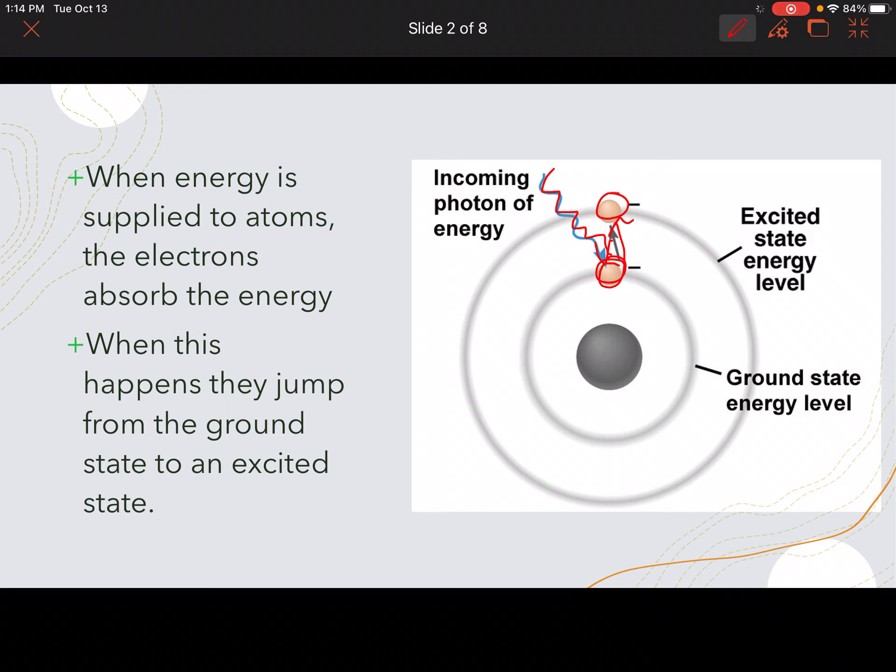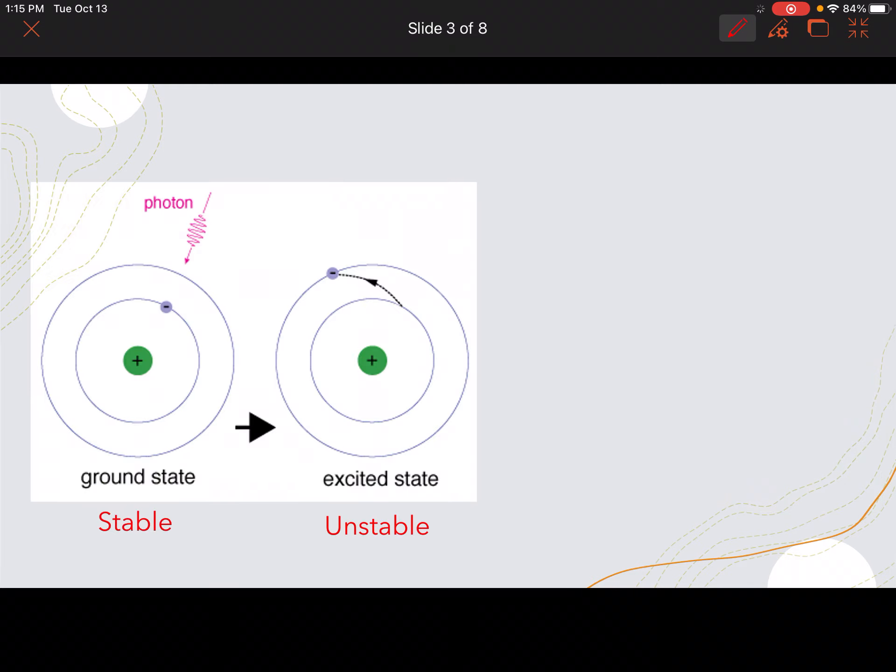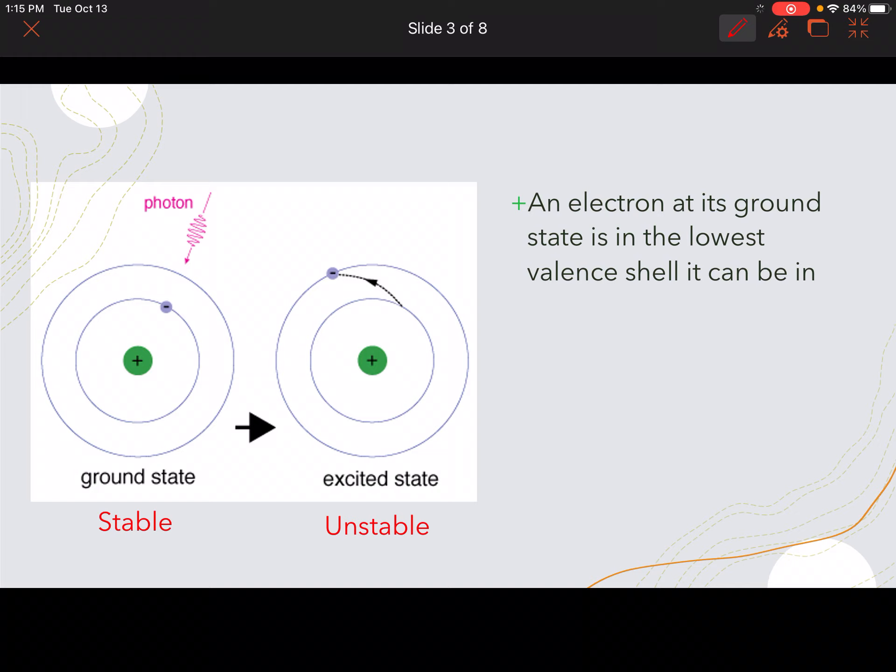So we've got ground states, we've got excited states. And so they jump when they absorb the energy. An electron is at its ground state when it's in the lowest possible valence shell. So the picture on the left here, this is our ground state. The ground state is stable. That electron is happy where it is, just doing its thing.